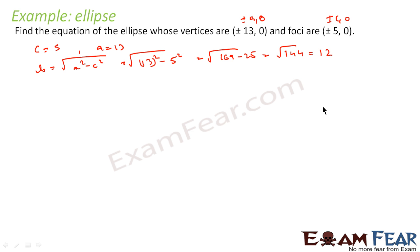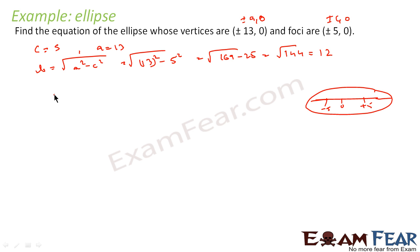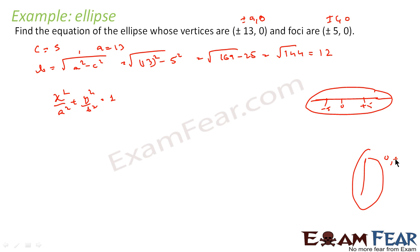Now since the foci are on the x-axis — that is ±5, 0 — the equation is of the form x²/a² + y²/b² = 1. Had the foci been of the form 0, ±5, then the equation would be of the form x²/b² + y²/a² = 1.